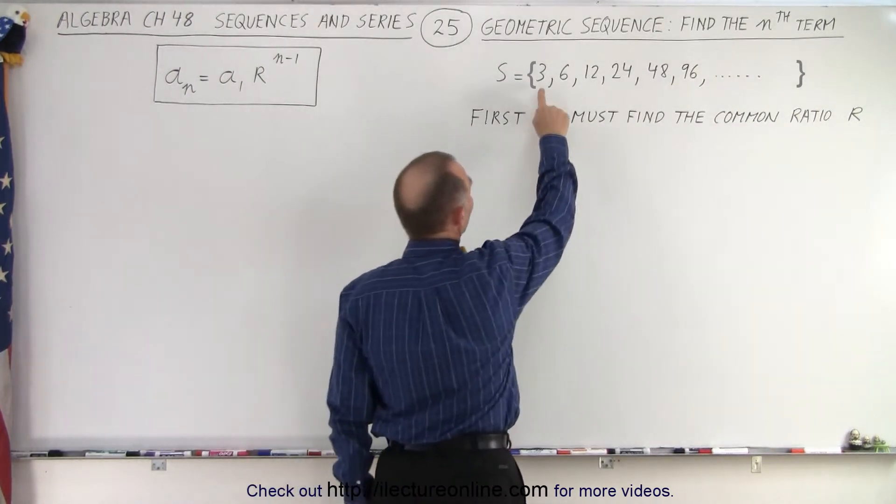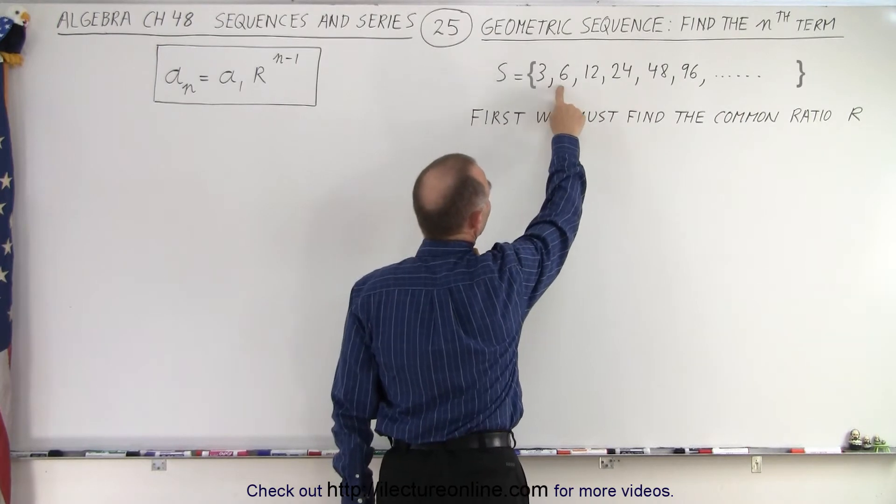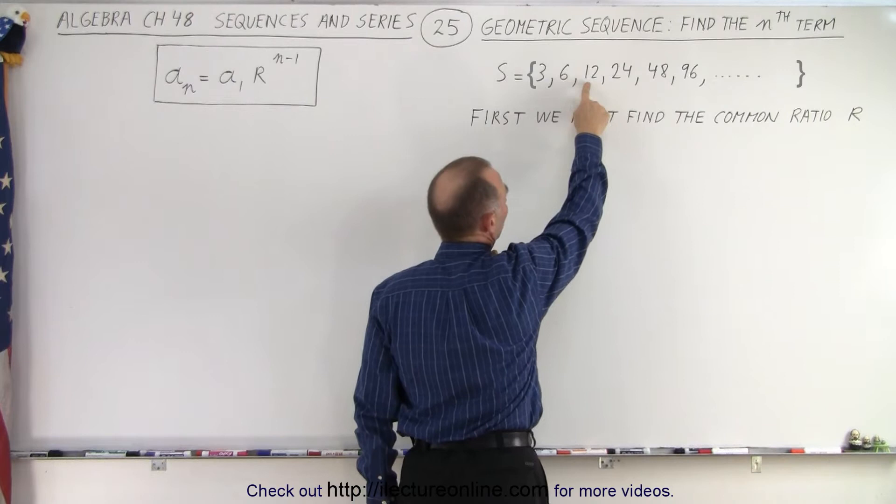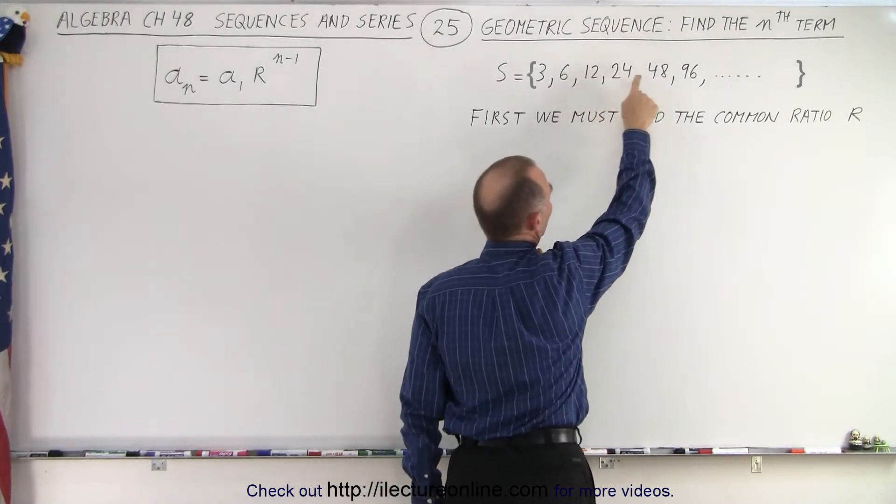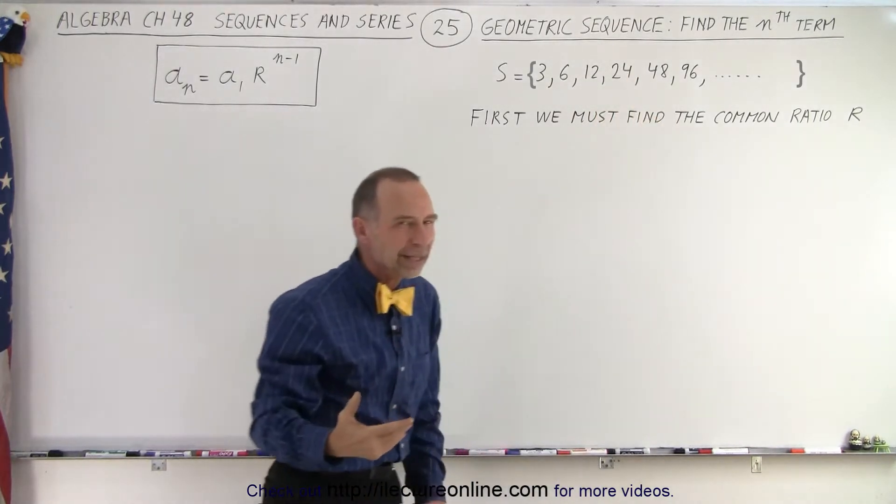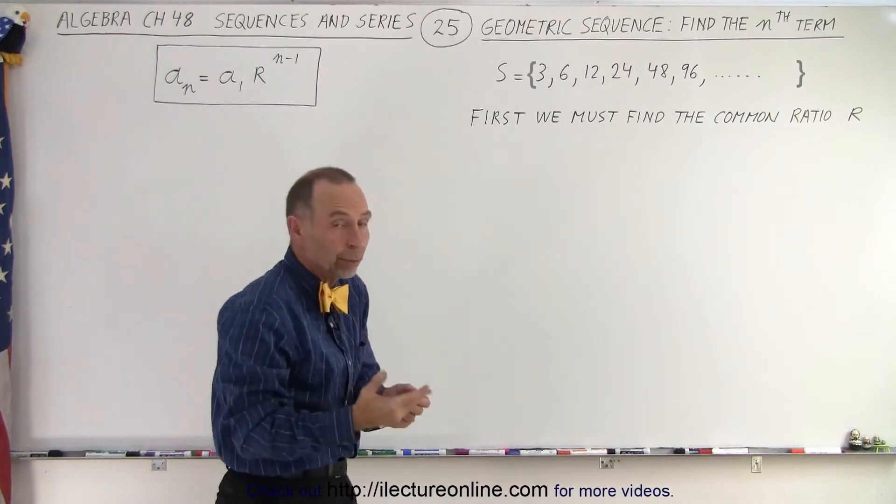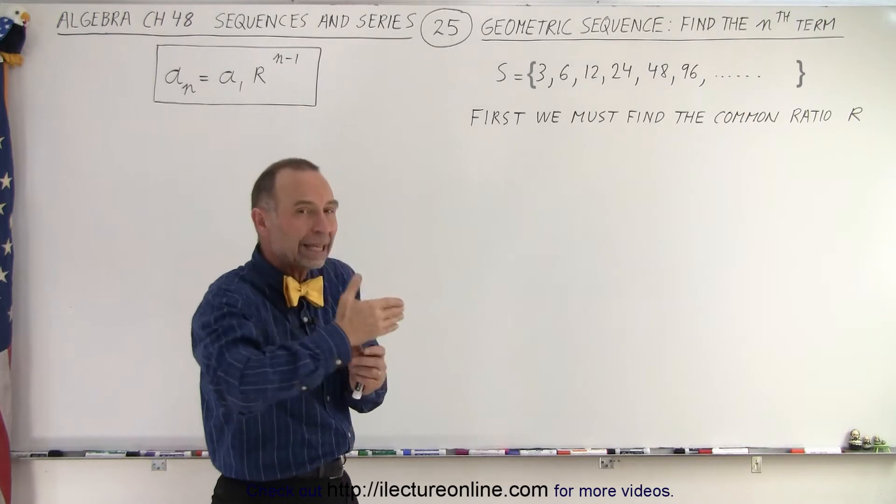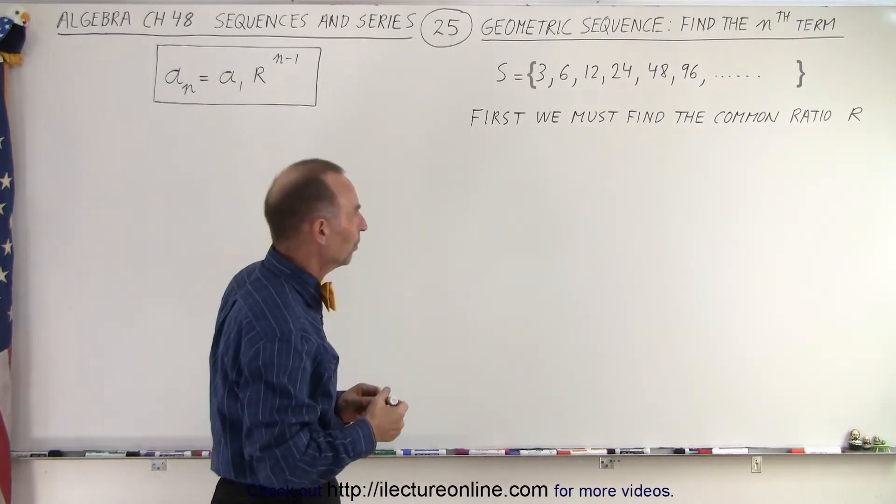So here we have an example of a geometric sequence. Notice that we have to multiply this number by 2 to get the next number, multiply this by 2 to get the next one, 12 times 2 is 24, 24 times 2 is 48. So you can see here that the common ratio is equal to 2. You have to multiply each number in the sequence by 2 to get to the next term.